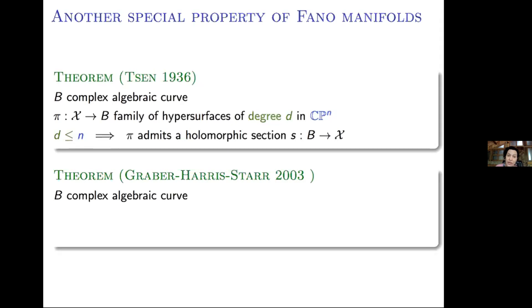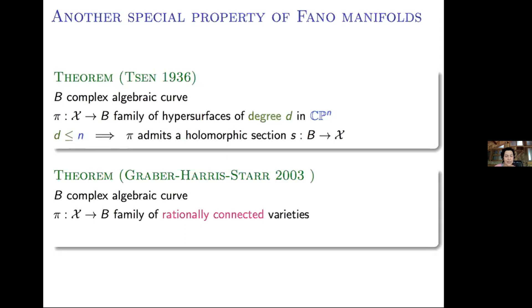This is a very important theorem of Graber, Harris, and Starr. They proved the following generalization of Senn's theorem: if you have a complex algebraic curve B and any family of rationally connected varieties over B, then the family admits a holomorphic section.